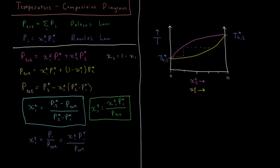The vapor pressure of each component is a function of temperature, and the total pressure is just the sum of the individual vapor pressures. So each of these quantities varies with temperature as the vapor pressures change. We can plot the result — the composition of the gas phase in purple and the liquid phase in yellow — giving us a diagram which tells us, as a function of temperature, what the composition of each phase is.